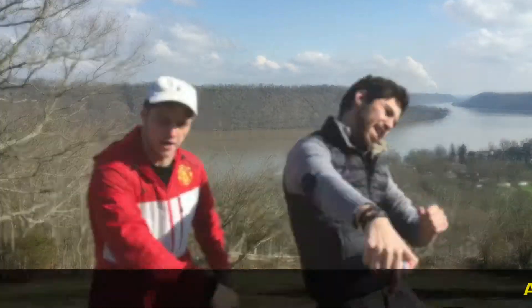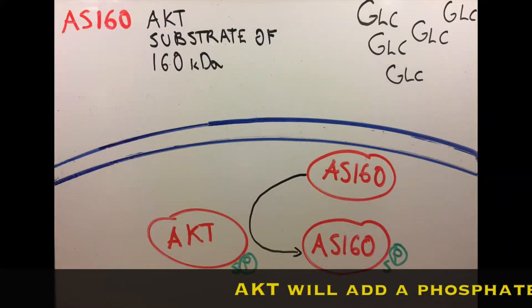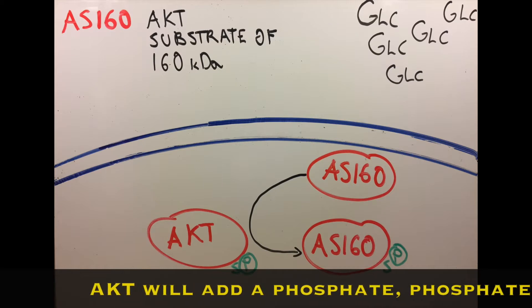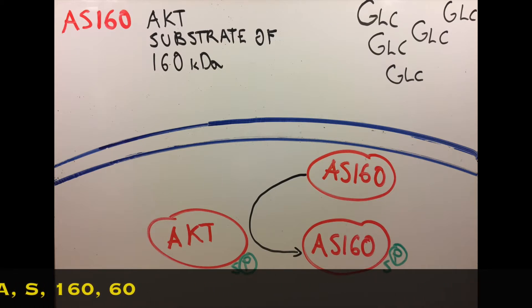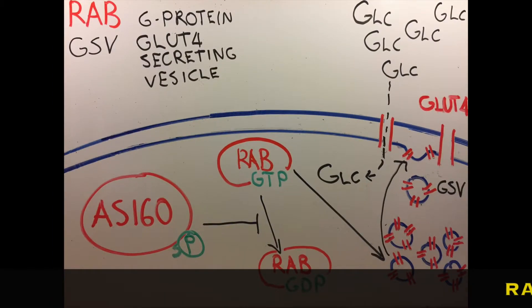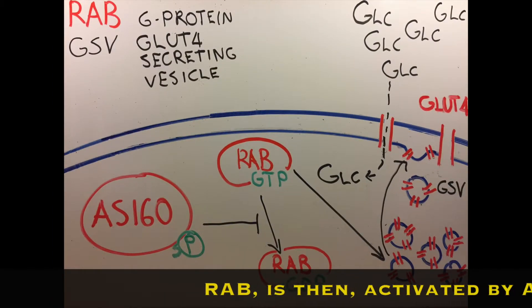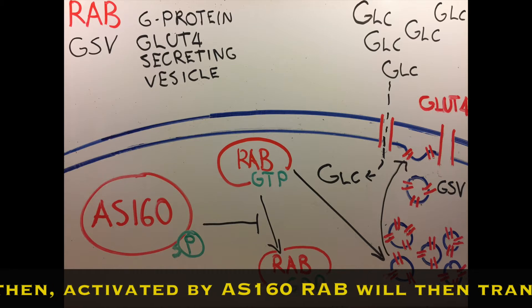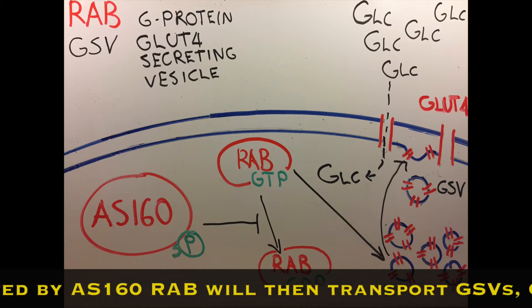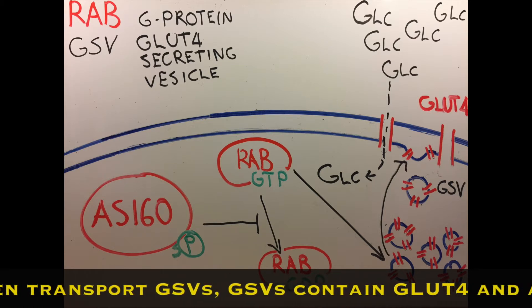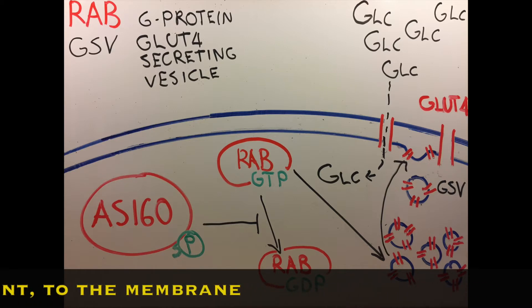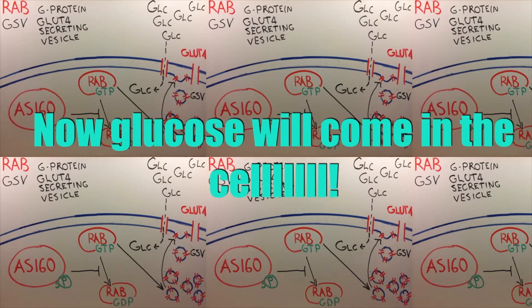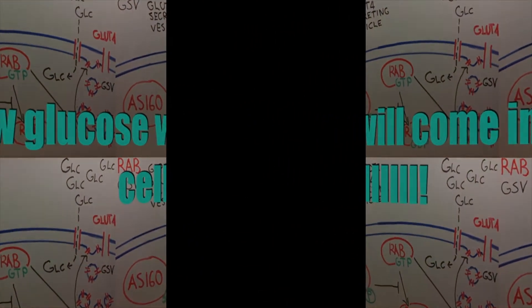Sending glucose to the sub-membrane. AKT will add a phosphate to AS-160. RAB is then activated by AS-160. RAB will then transport GSVs — GSVs can take glucose and are sent to the membrane. Now glucose will come in the cell.